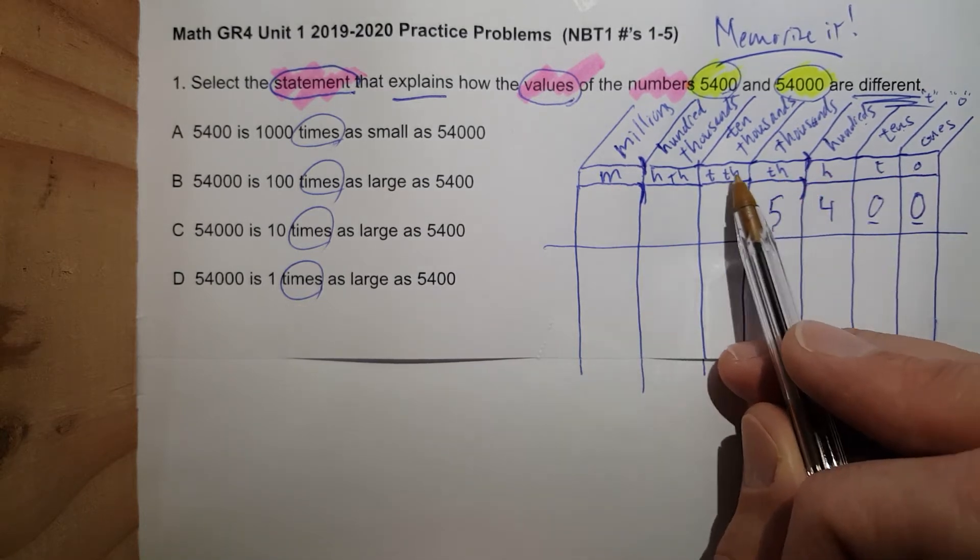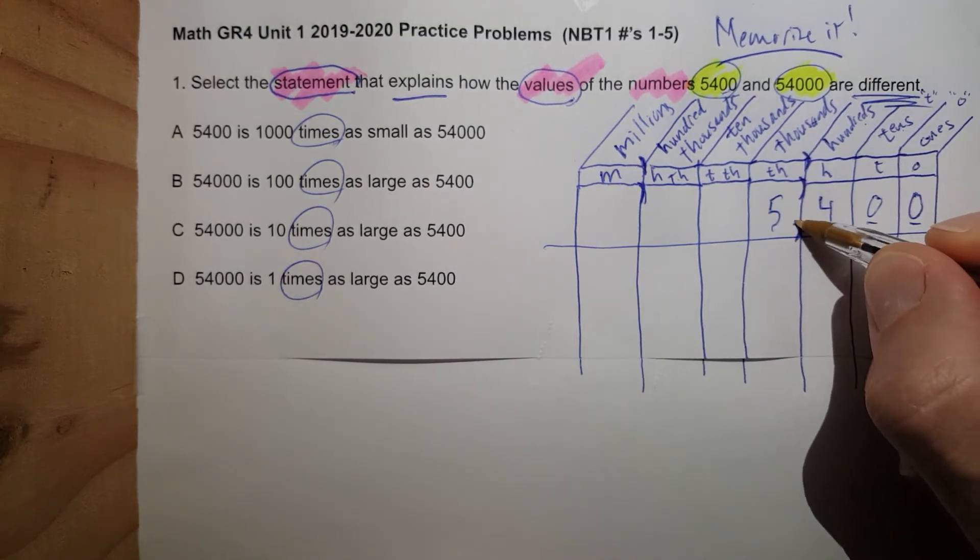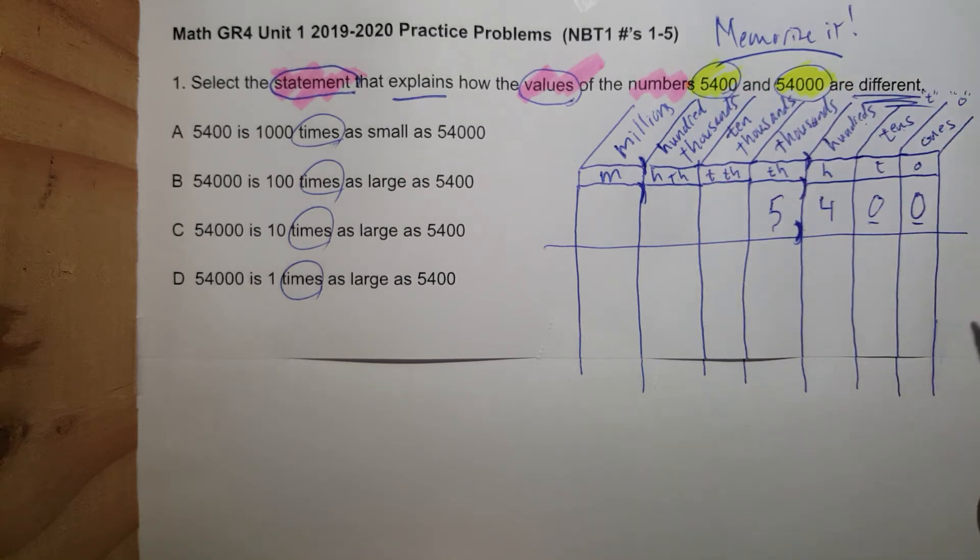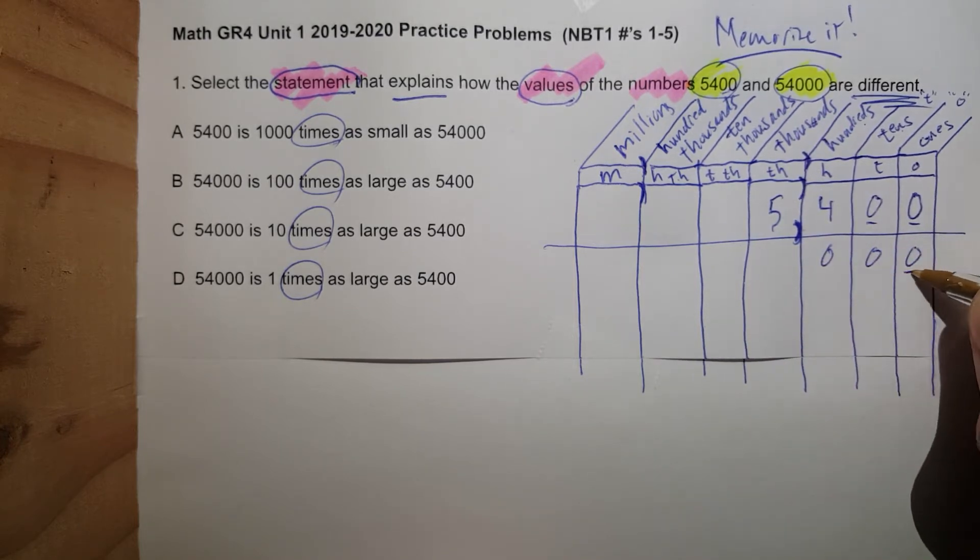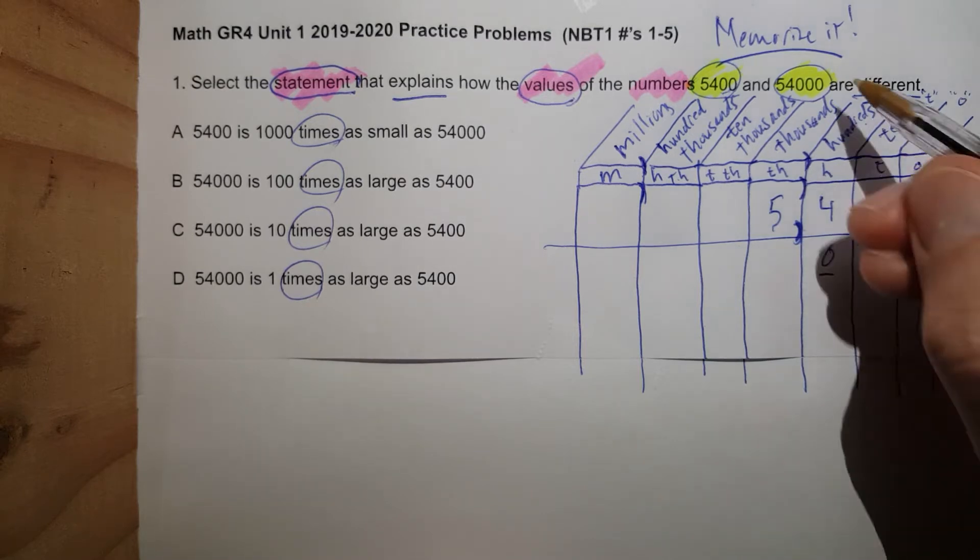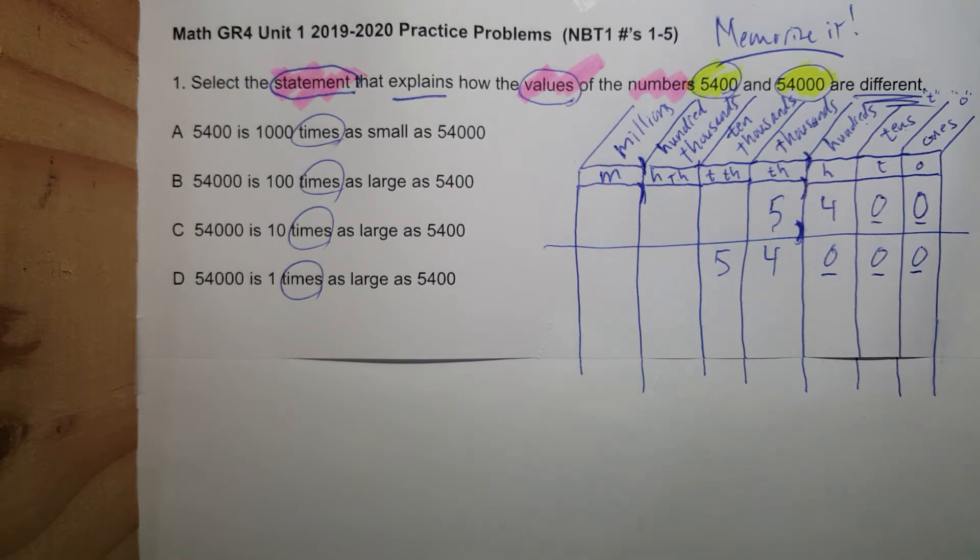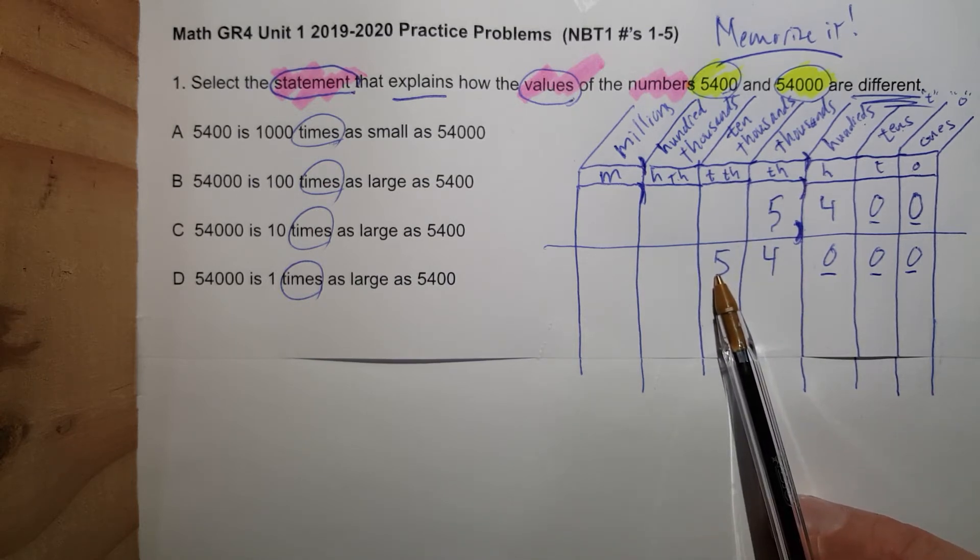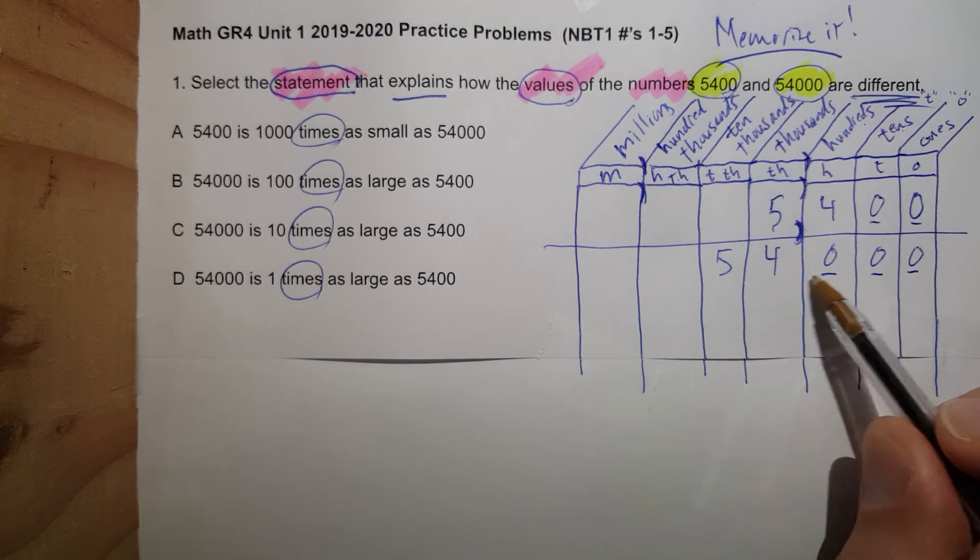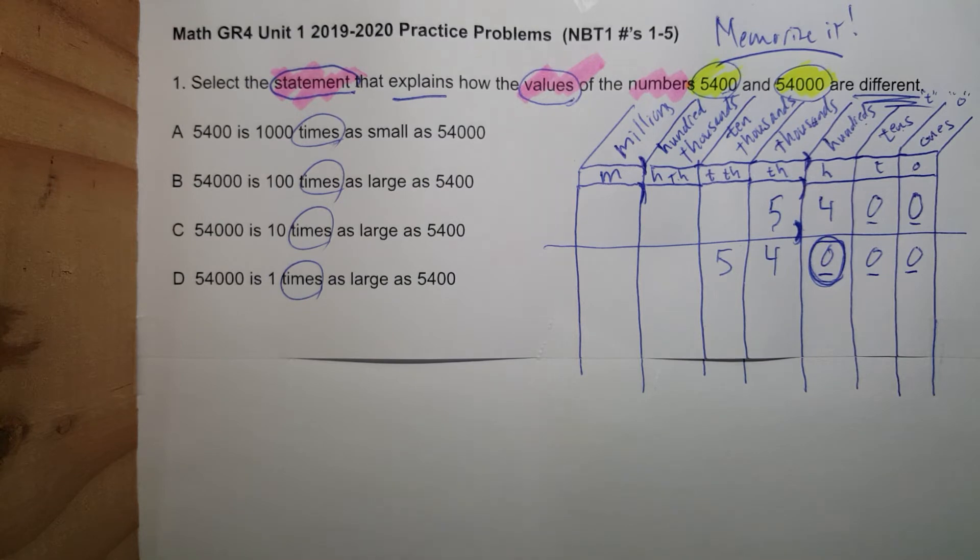So we have 5,400. I'm going to put the comma in there. They didn't put commas in there, they just didn't do it. Next number, notice how I have three zeros. And then I have 4 and the 5. Now we need to see how they are different. They are only different by one place. Notice that? They are only different by 54,000 has one extra zero. I'm going to put it in orange.